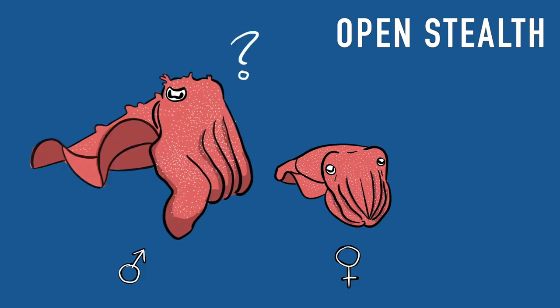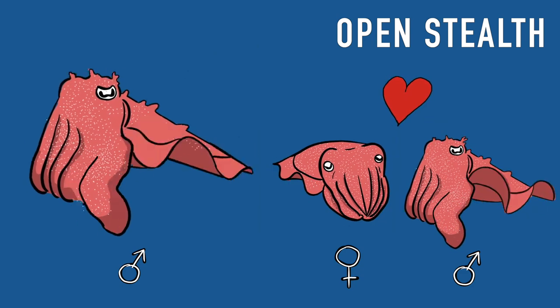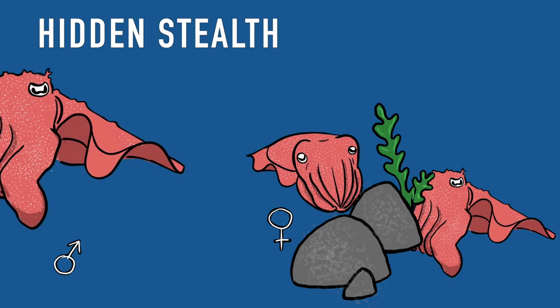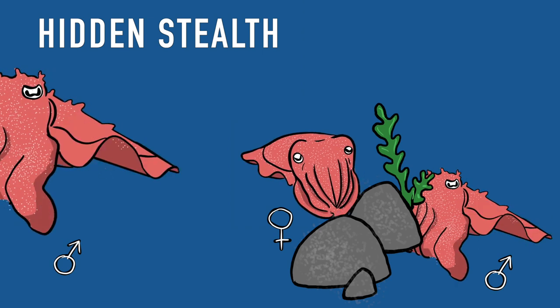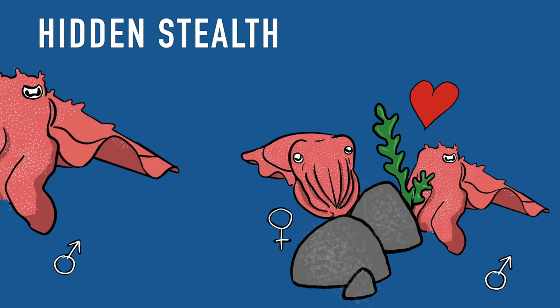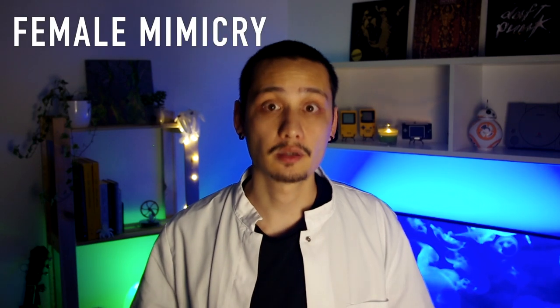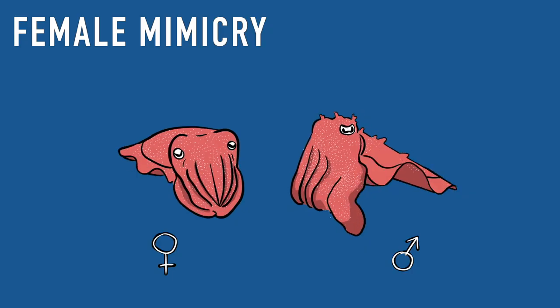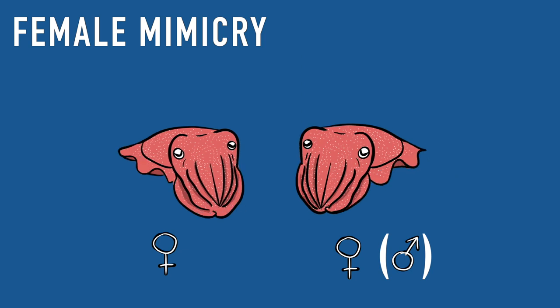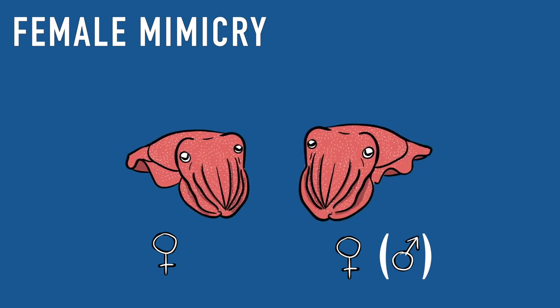The small males wait patiently for extra pair copulation. The small males use three strategies: 1) Open stealth — the small male waits until the big male is distracted. 2) Hidden stealth — the small male waits under a rock until a female comes by looking for a place to lay her eggs. 3) Female mimicry — the small male adopts the appearance of a female in order to gain access to a guarded female.